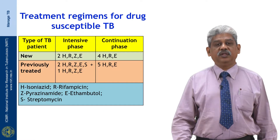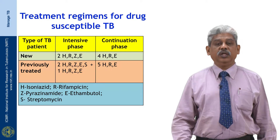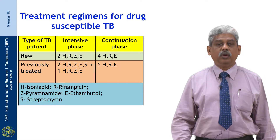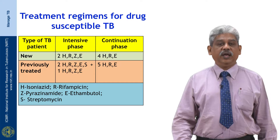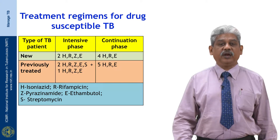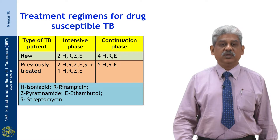In extrapulmonary TB, all new TB patients have to have a six-month therapy with isoniazid, rifampicin, ethambutol, and pyrazinamide daily for the first two months, followed by four months of isoniazid, rifampicin, and ethambutol. Ethambutol is added because there is a high level of primary drug resistance even to INH in our country, and we do not want to have acquired drug resistance to rifampicin. For previously treated patients the regimen is an eight-month course with streptomycin for the first two months and all four other drugs, followed by five months of INH, rifampicin, and ethambutol.